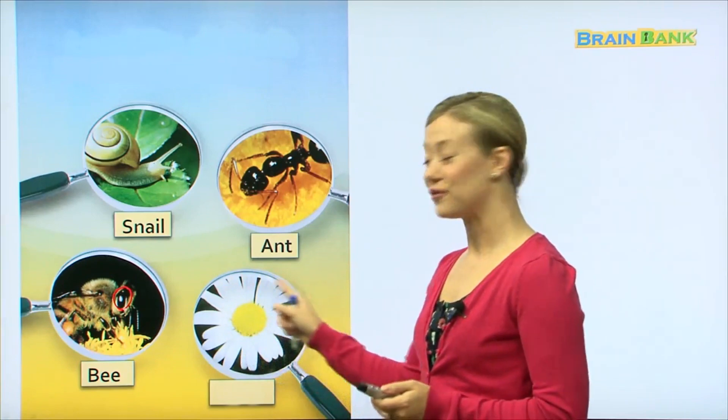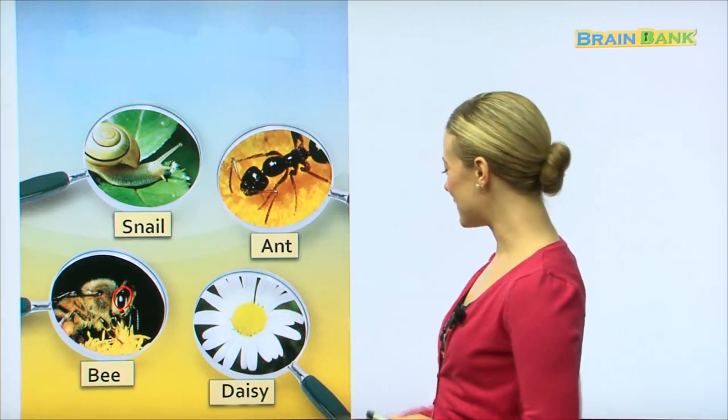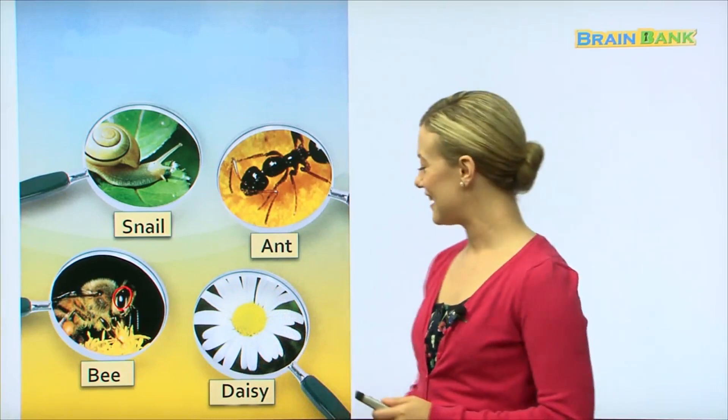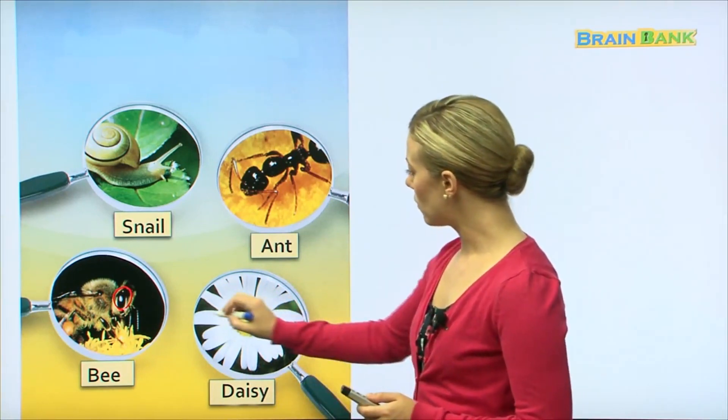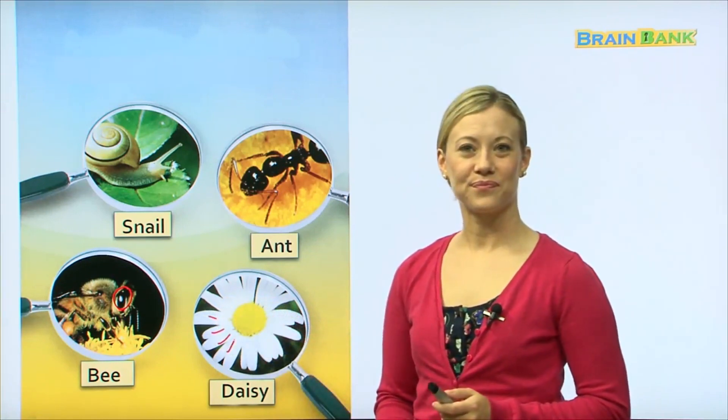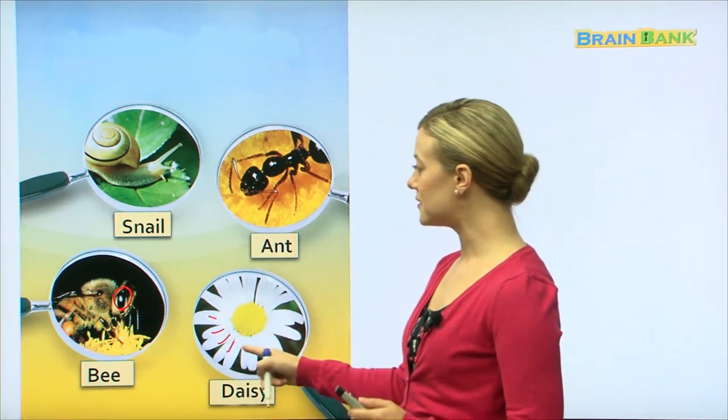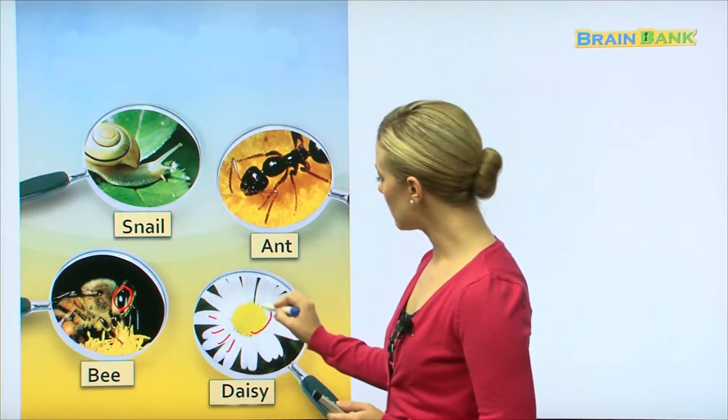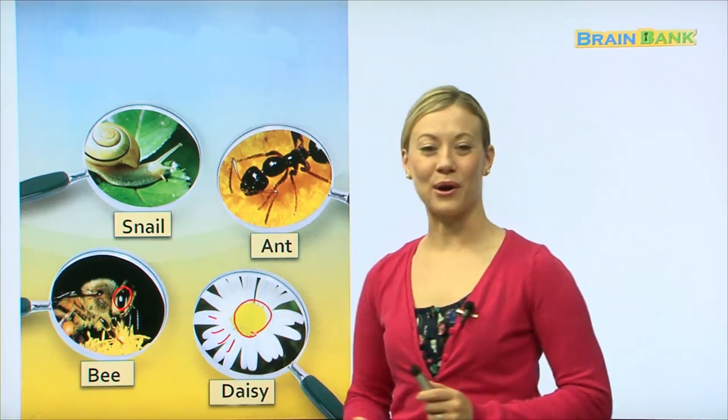And last, this is not an insect. This is beautiful. Does anyone know what kind of flower this is? Very good, I heard somebody say daisy. This is a daisy, a very beautiful daisy. Now what do we call all of those flowers? Do you remember? Yes, these are called petals. And what about in the middle, what do we call that part? Very good, those are all the seeds. Excellent.